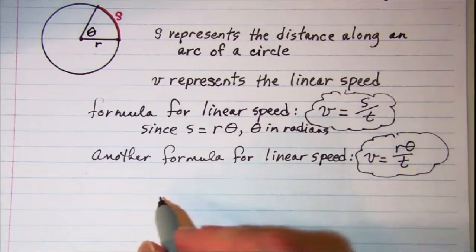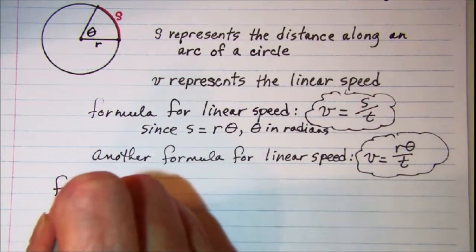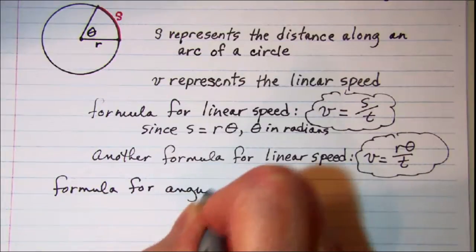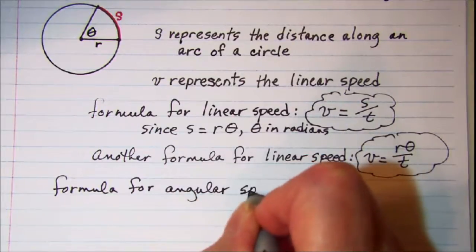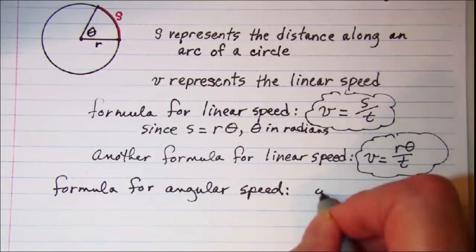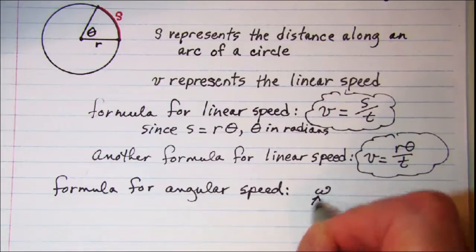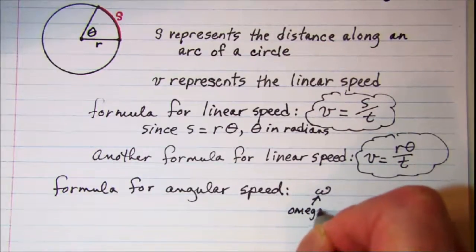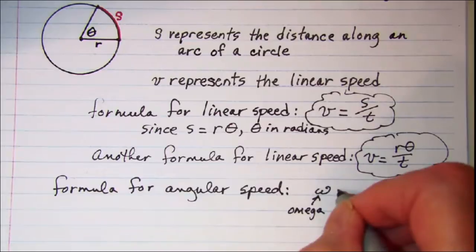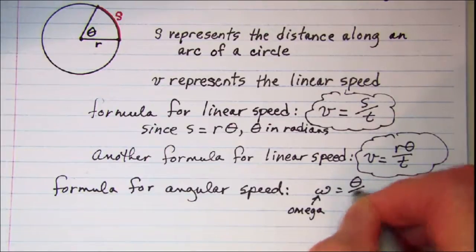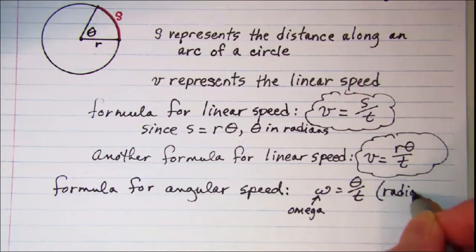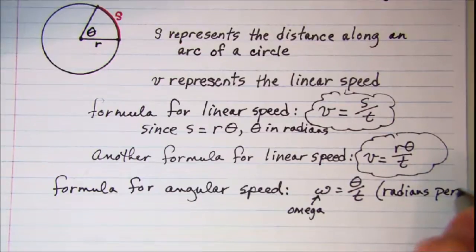Now a formula for angular speed. We use omega for the speed in radians per unit. So omega equals theta divided by t, and this is in radians per unit of time.